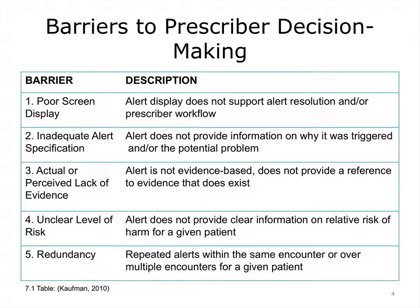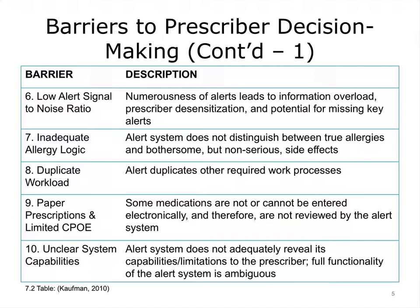Some of the barriers have to do with interface issues, such as problems associated with the display of an alert. An alert may not provide adequate information as to why it was triggered. Some alerts may not be evidence-based or do not provide a reference to the evidence. Decisions often involve trade-offs and some alerts fail to specify the relative risk of patient harm. Alerts can be repeated over the course of an interaction and clinicians invariably become annoyed by such system behavior. If alerts appear too frequently, they can lead to information overload and prescriber desensitization, thereby increasing the potential for missing key alerts.